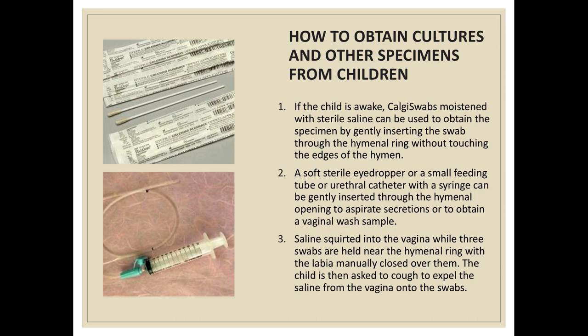To obtain cultures and other specimens from children, if the child is awake, Calgy swabs moistened with sterile saline can be used to obtain the specimen by gently inserting the swab through the hymenal ring without touching the edges of the hymen. A soft sterile eyedropper, a small feeding tube, or a urethral catheter with a syringe can be inserted through the hymenal opening to aspirate secretions or obtain a vaginal wash sample. Alternatively, saline is squirted into the vagina while three swabs are held near the hymenal ring with the labia manually closed, and the child is asked to cough to expel the saline onto the swabs.